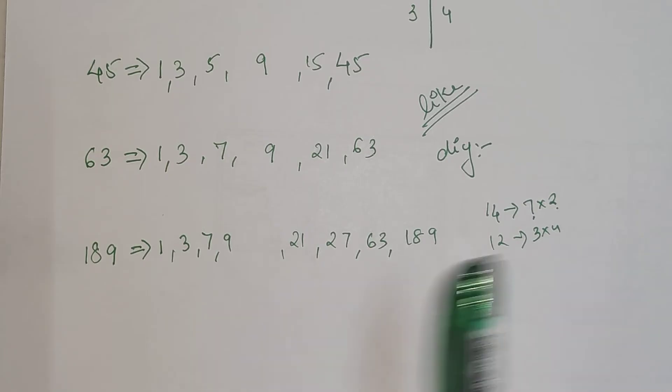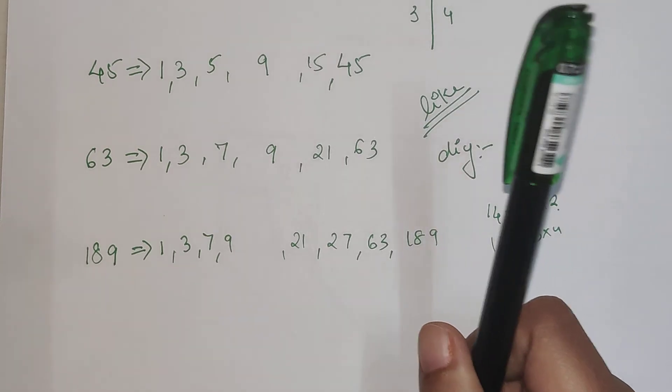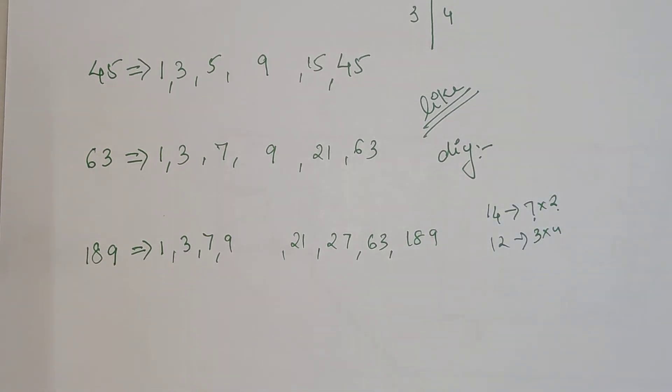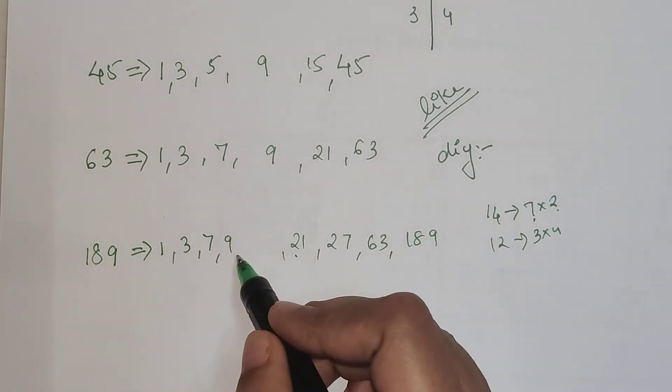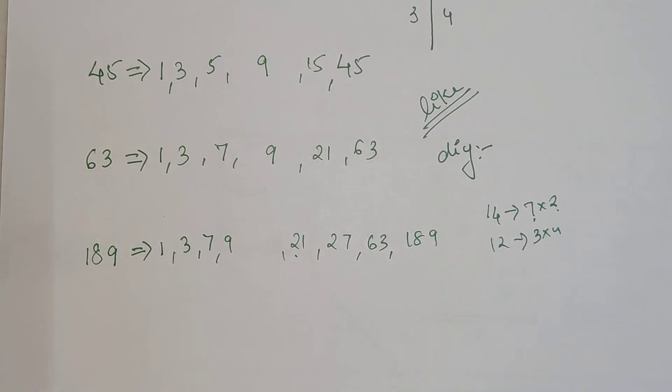If you want to know what are the divisibility rules, I'll put a link for them on top or somewhere in the description. Then again 17 doesn't work, 18 doesn't work, 19 doesn't work, 20 doesn't work. 21 will work but 21 has been taken care of, so here we can say these are the factors for the number 189.